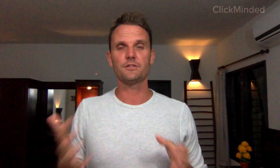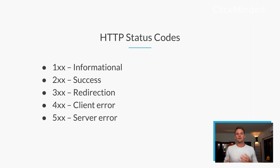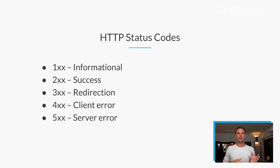Let's jump into each one of these. The 100 block — these are informational requests. The 200 block — those are successful requests. The 300 block is for redirects. The 400 block is for client errors, and the 500 block is for server errors.